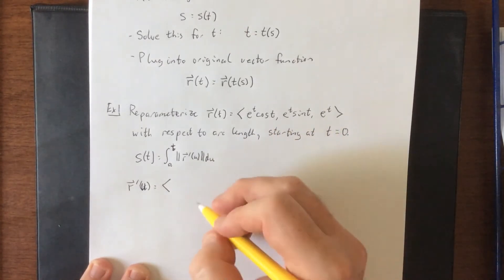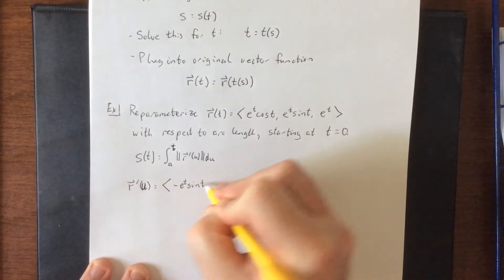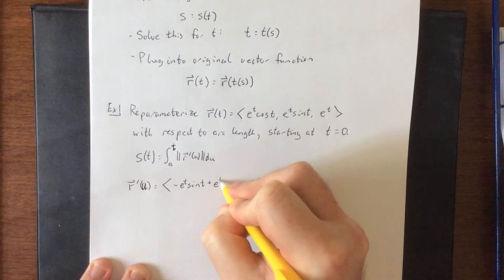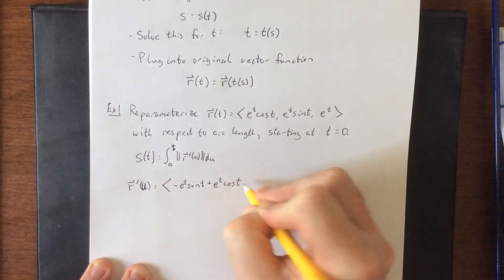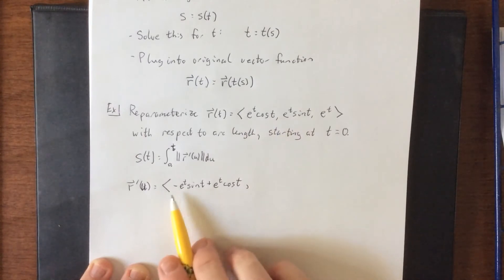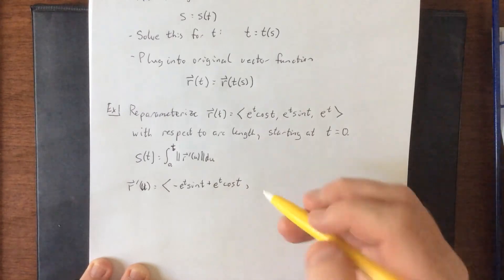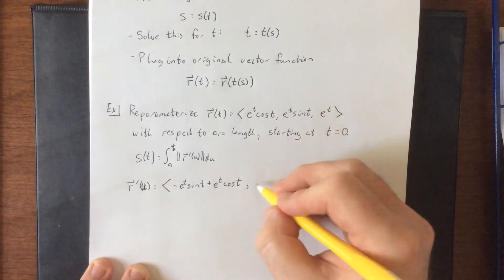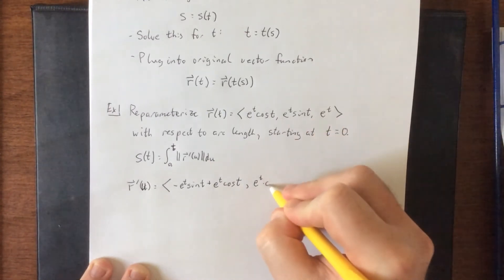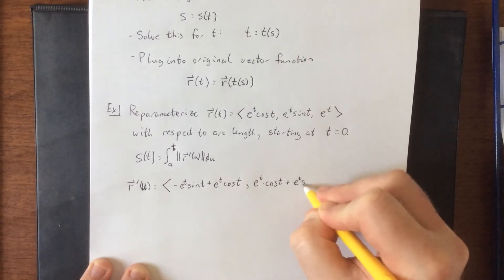First two will require the product rule. So first times derivative of the second plus second times derivative of the first. So derivative of cosine of t was negative sine of t, which is how that negative sine got there. And then second times derivative of the first, derivative of e to the t is just e to the t. We'll do the same thing for the next one. First times derivative of the second plus second times derivative of the first.